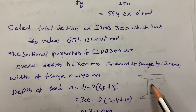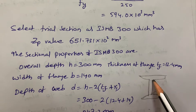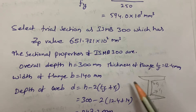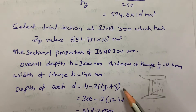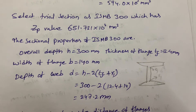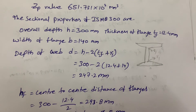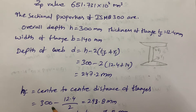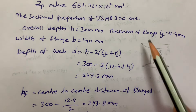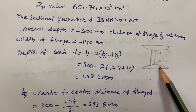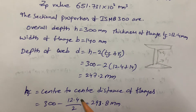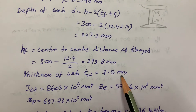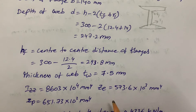There are two flanges and two root radii R1. So we calculate the web depth by subtracting 2 × (TF + R1) from the total height, giving 247.2 mm. HF, the center-to-center distance of the flanges, is 300 − 12.4/2 − 12.4/2 = 293.8 mm. Thickness of the web TW = 7.5 mm. These values are available in the steel tables or code book.